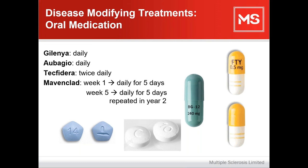We also have Mavenclad, which is a newer medication with a complex dosing regime. In week one, the tablet is taken daily for five days, then again in week five for five days. That regime is repeated in year two. The dosing is dependent on body weight, so some people will be prescribed more tablets than others.